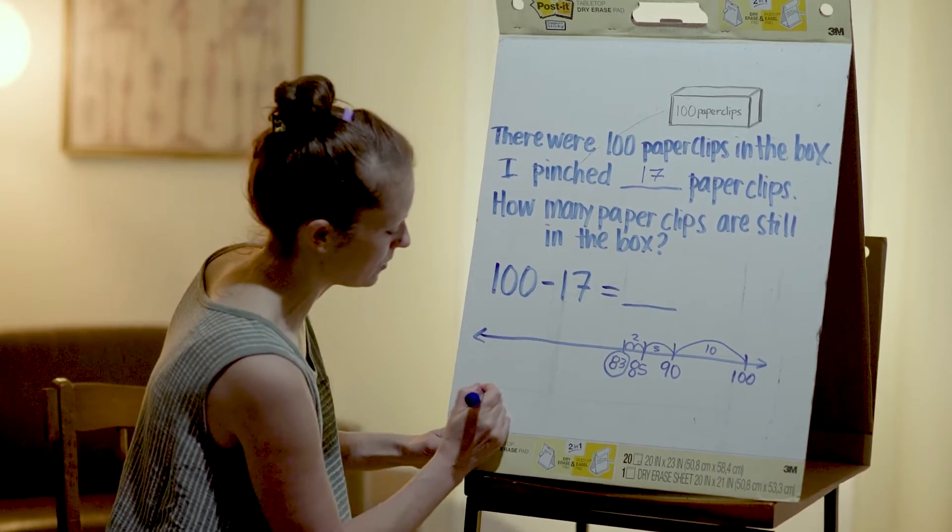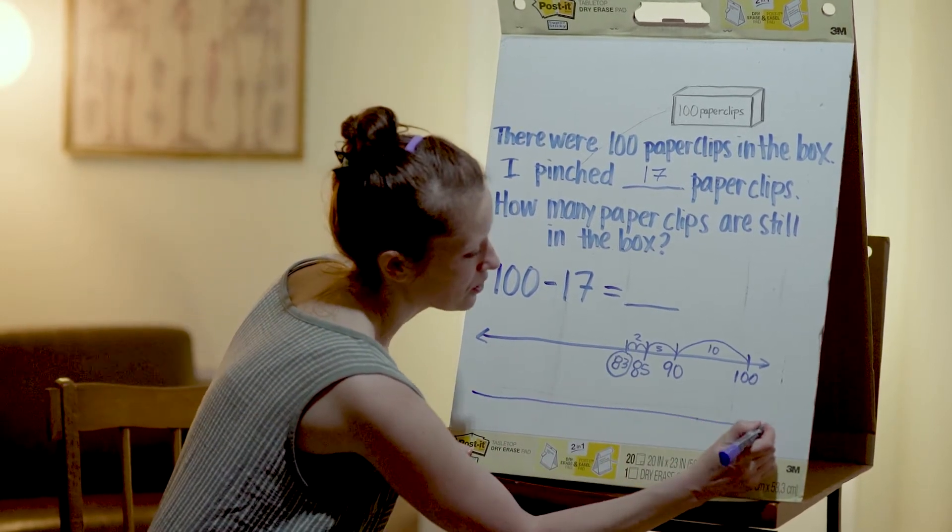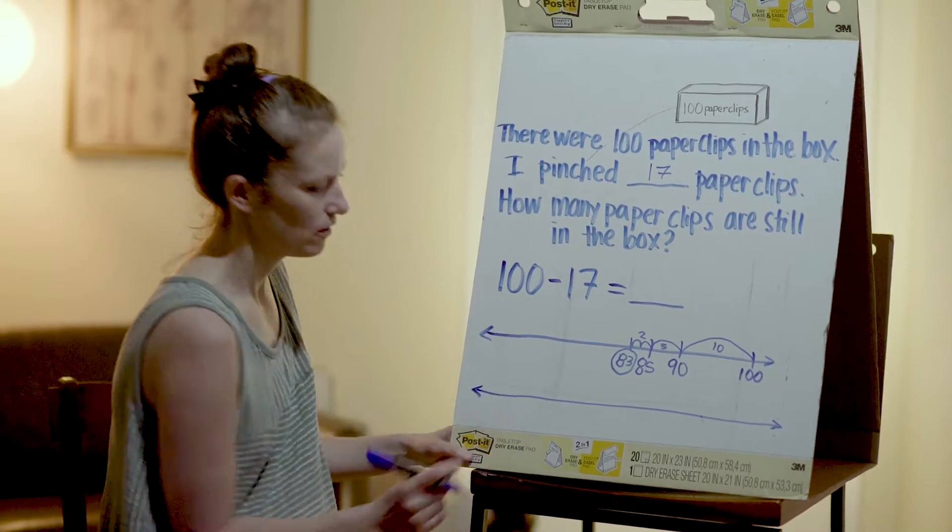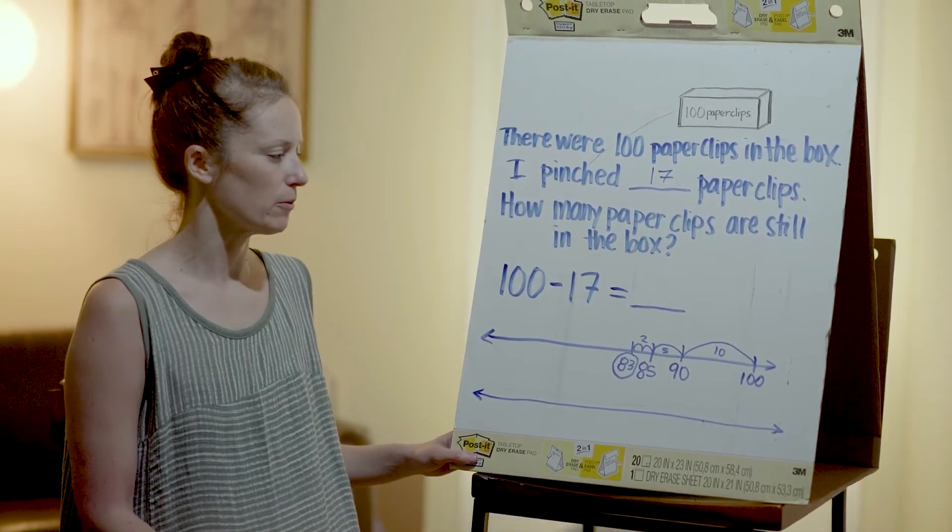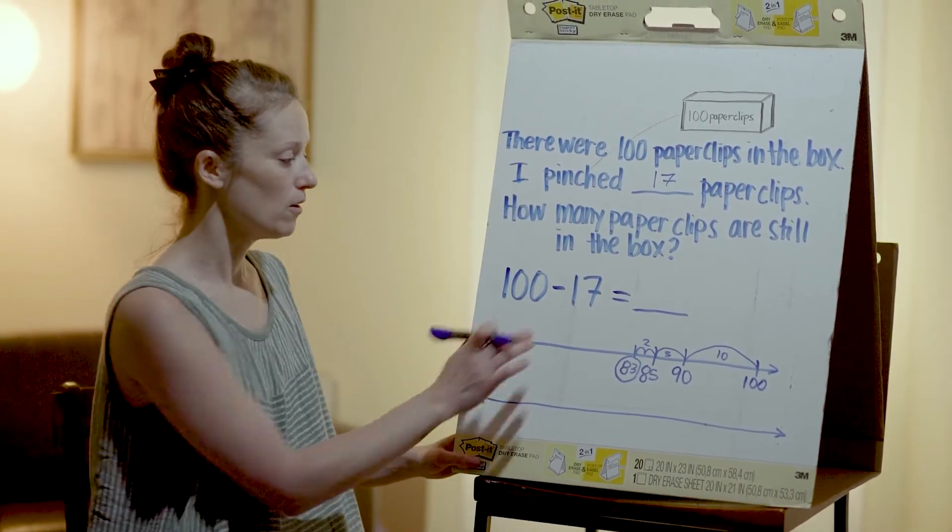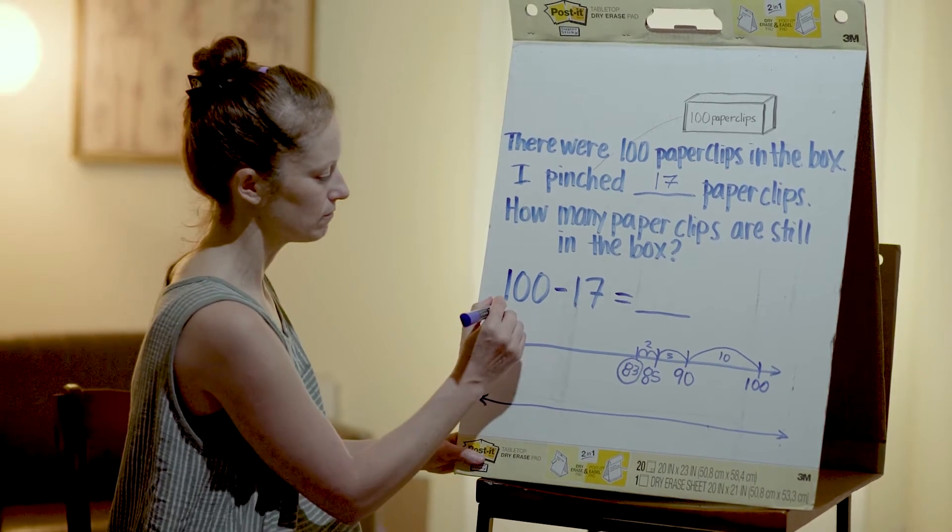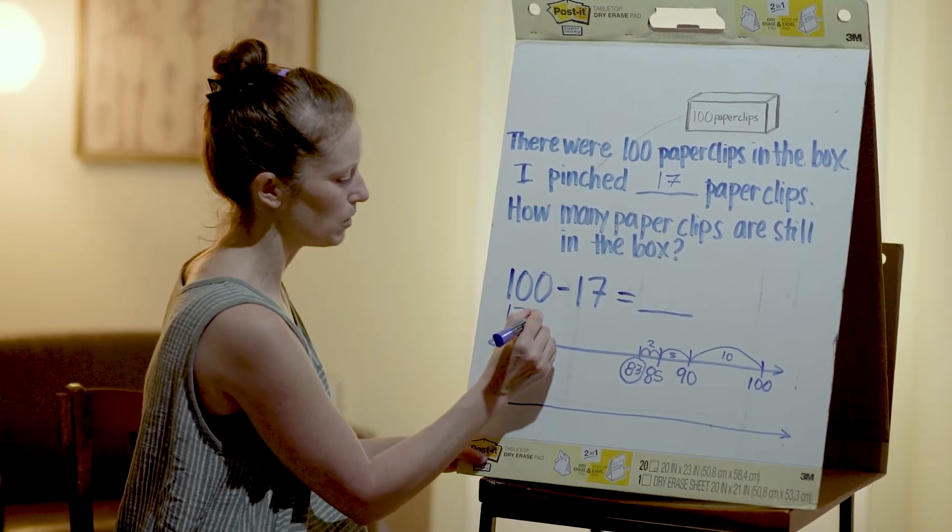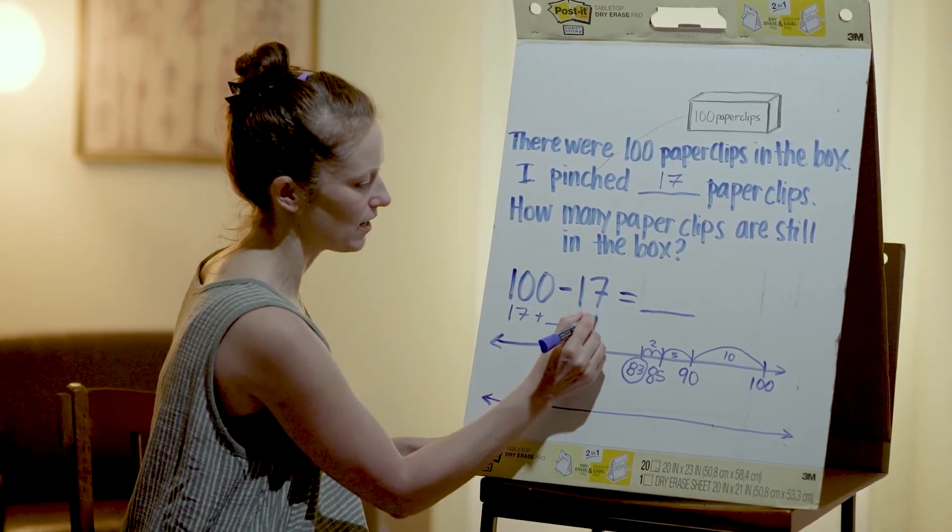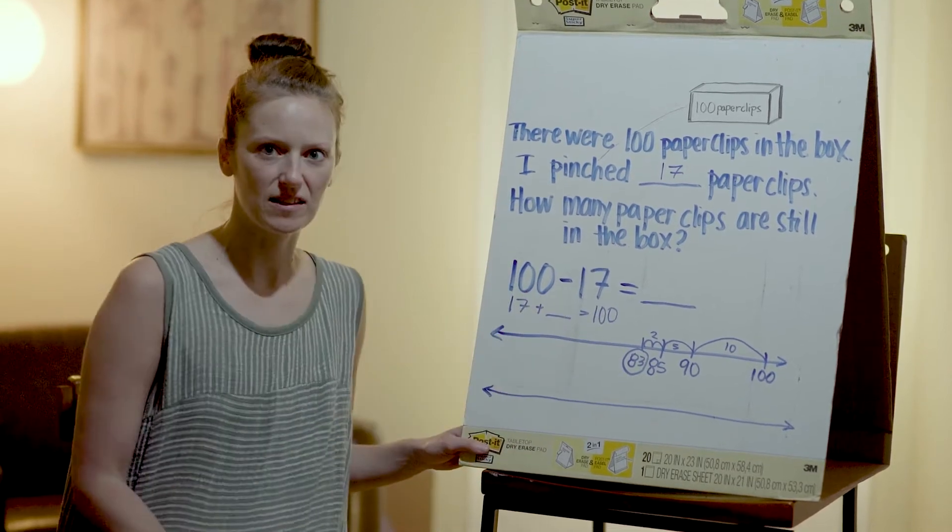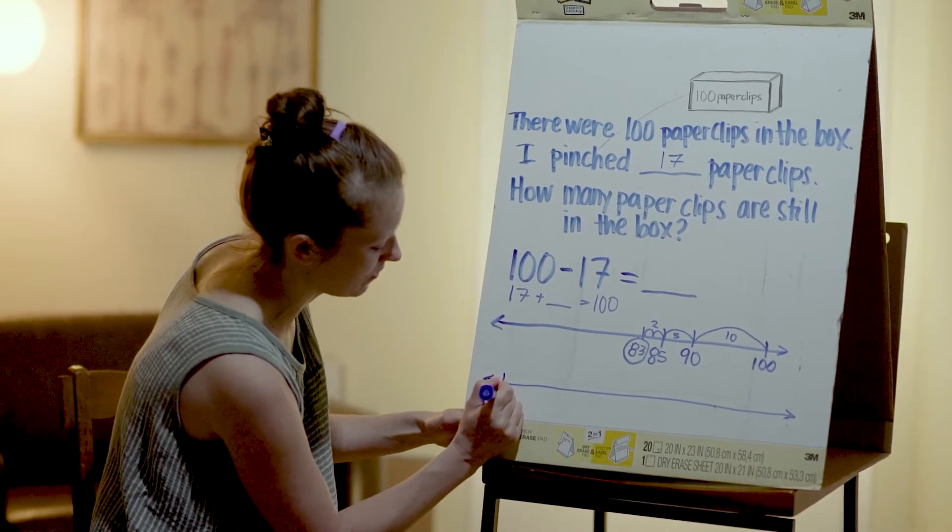All right, I'm going to show you one more way we could do this on the number line. So we've tried it jumping back. Let's see if we can try it jumping forward. So I know that we have 17. 17 plus something will get us to 100. We need to figure out that something. So we're going to start at our 17.